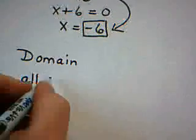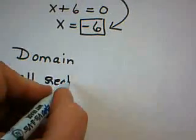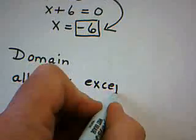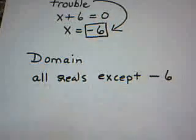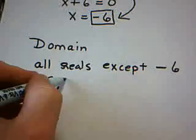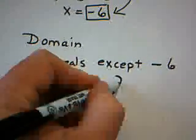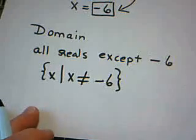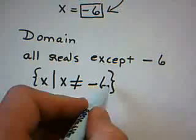The domain would be the set, well, basically, I could say all reals, all real numbers, except for negative 6. Now, another way to write that is to say the set of all x's, such that x is not equal to negative 6. But in this particular problem, we were asked to give the domain using interval notation. This is called set builder notation.